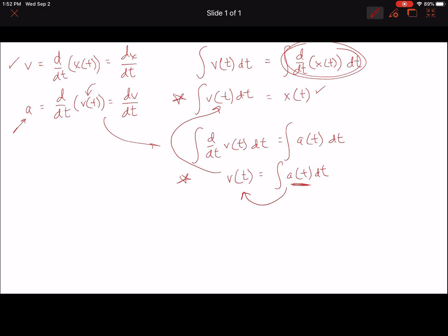So if you know something about the position of an object, you can take derivatives to find out about its velocity and acceleration. If you know something about the acceleration of an object, you can take integrals to find out about its velocity and position over time, or as a function of time.